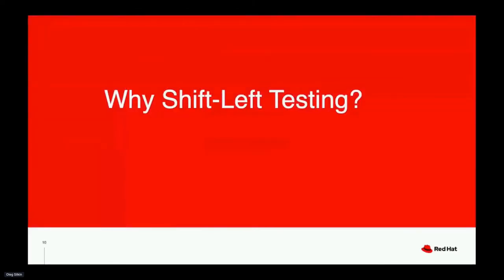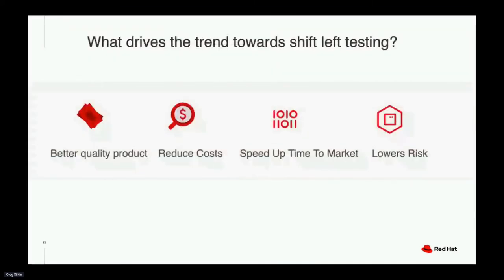Now we enter the second part: why do we need to adopt shift-left testing practice? In Red Hat, when we drive towards shift-left testing, we get a few obvious benefits. First, we get a better quality product. In shift-left testing practice, we execute testing continuously and test cases are executed again and again. In the end, it reduces defects, and eventually we get a better quality product.